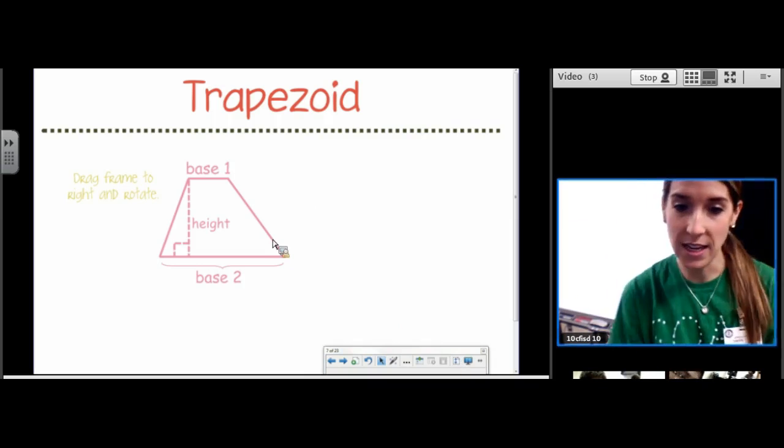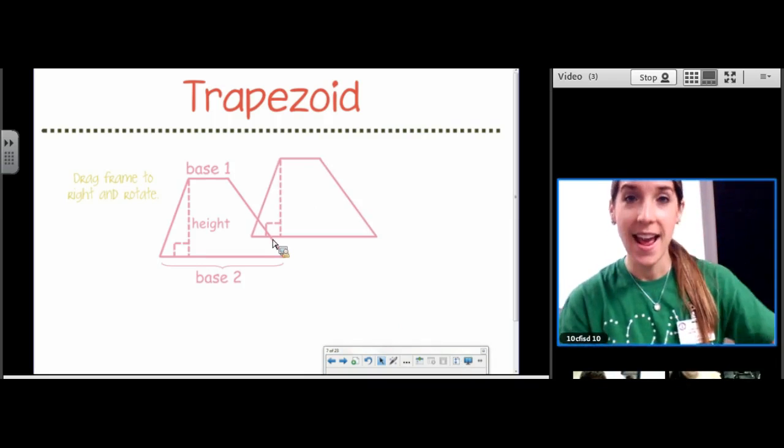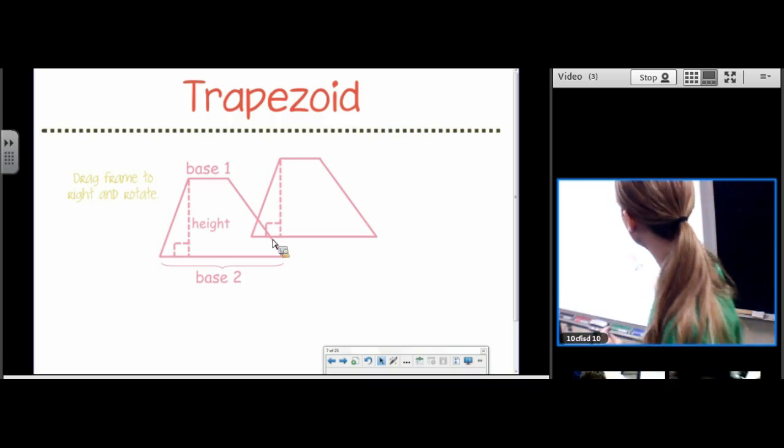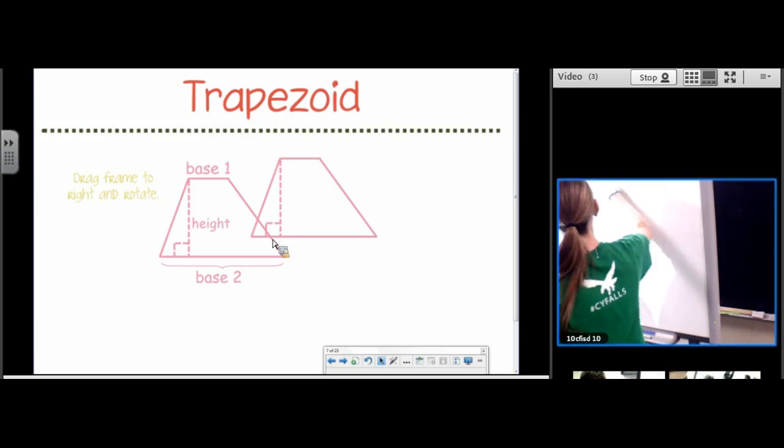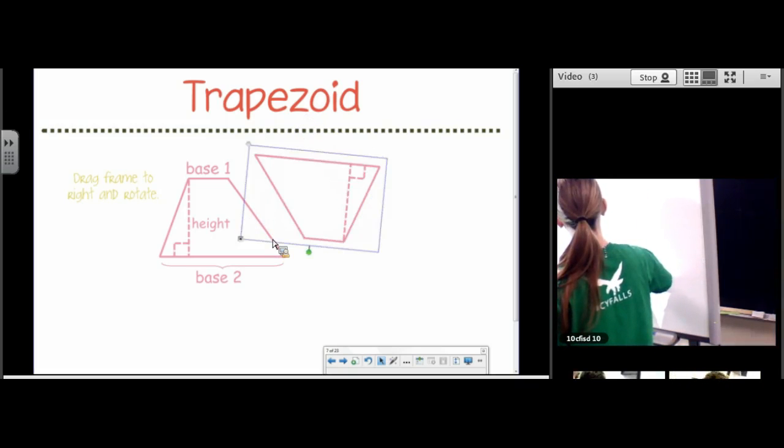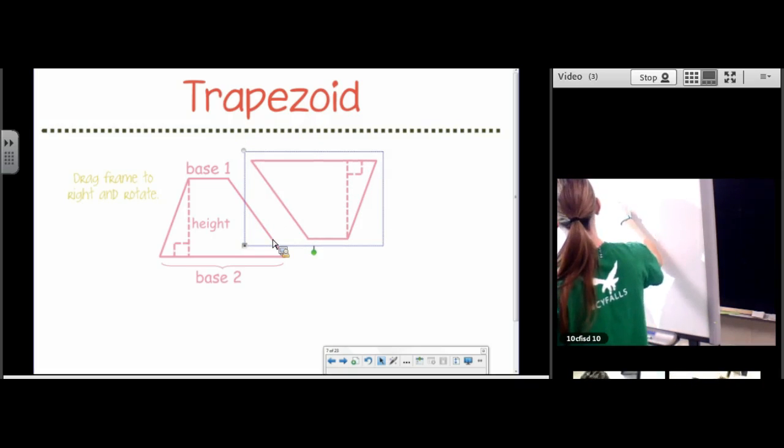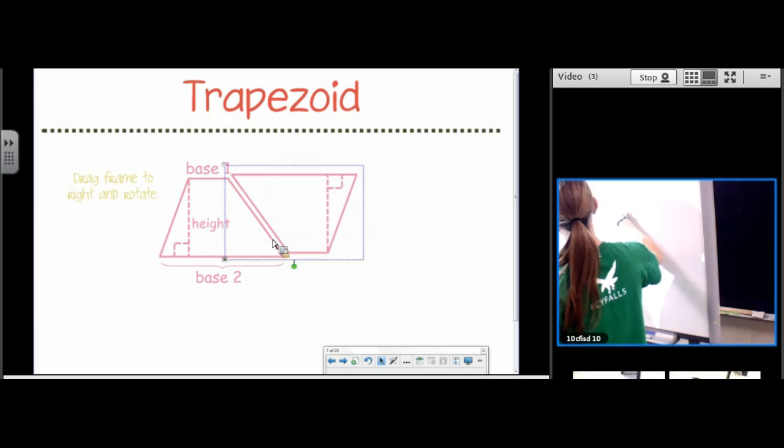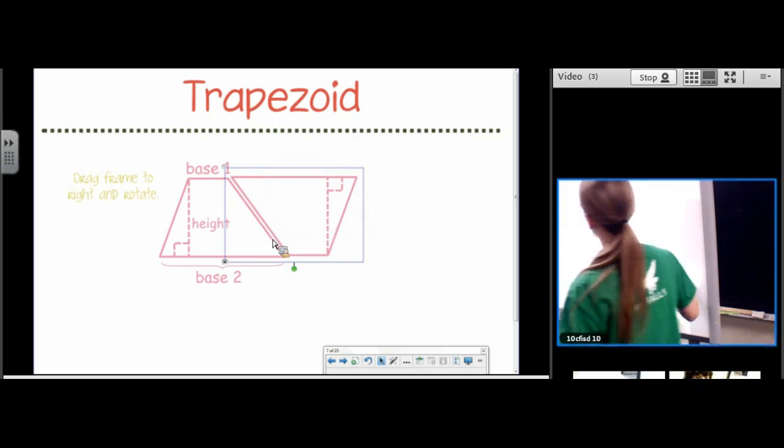Since I doubled it, since I duplicated it, at the end we're going to need to divide by 2. So don't let me forget to divide by 2. I'm going to rotate it. And now, what figure did I form?